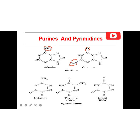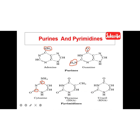For the pyrimidines, we have cytosine, thymine, and uracil. Note that thymine is found in DNA but not in RNA — what you see in RNA is uracil. The major difference between cytosine and thymine is that for cytosine, both an amino group and an oxygen group are located at specific carbons, while for thymine there is a replacement of the amino group with an oxygen group and an additional methyl group (CH3) at that carbon.